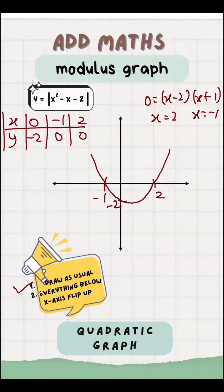After sketch usual, everything below x-axis will flip up. Minus 2 become 2. Then successfully, we get the modulus graph for quadratic.